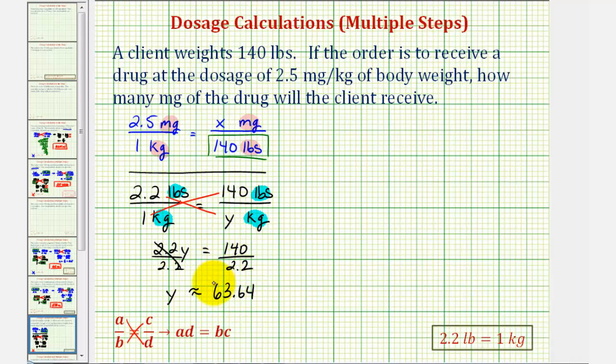And since y equals 63.64, 140 pounds is equivalent to 63.64 kilograms, which we can now substitute here in the original proportion. So if we perform that substitution, we'll have 2.5 milligrams to one kilogram must equal x milligrams to 63.64 kilograms.